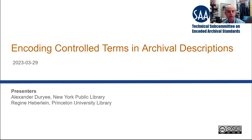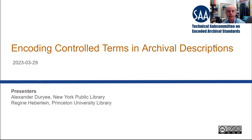Before we get started, I'd like to introduce our presenters. First, we have Alex Durie. Alex is the Manager for Archival Metadata at the New York Public Library and the COVID Tracking Project Archive Lead with the University of California, San Francisco. He also serves on the National Finding Aids Network, or NAFAN, Technical Advisory Working Group, SAA's Technical Subcommittee for Encoded Archival Standards, and is Chair of the SNAC Technology and Infrastructure Working Group.